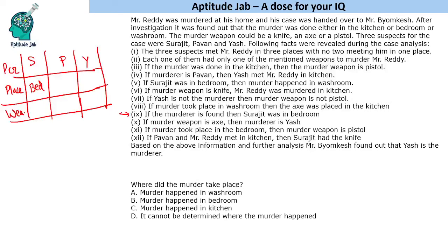Now connecting these statements like a para-jumble: the next statement says if Surajit was in the bedroom, then the murder happened in the washroom. So the murder happened in the washroom, meaning Yash killed him in the washroom. The third place is the kitchen, so Pavan must have been in the kitchen.